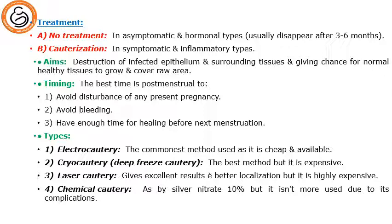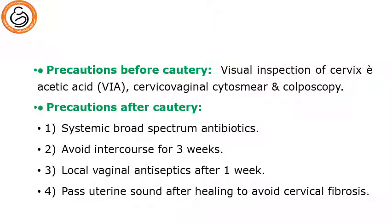Silver nitrate may lead to fistula formation. Before cauterization, we have to do visual inspection with acetic acid (VIA test), or take a Pap smear and do colposcopy to exclude malignancy. Precautions after cauterization: give systemic broad-spectrum antibiotic, avoid intercourse for three weeks, apply local vaginal antiseptic after one week, and pass a uterine sound after healing to avoid cervical fibrosis.